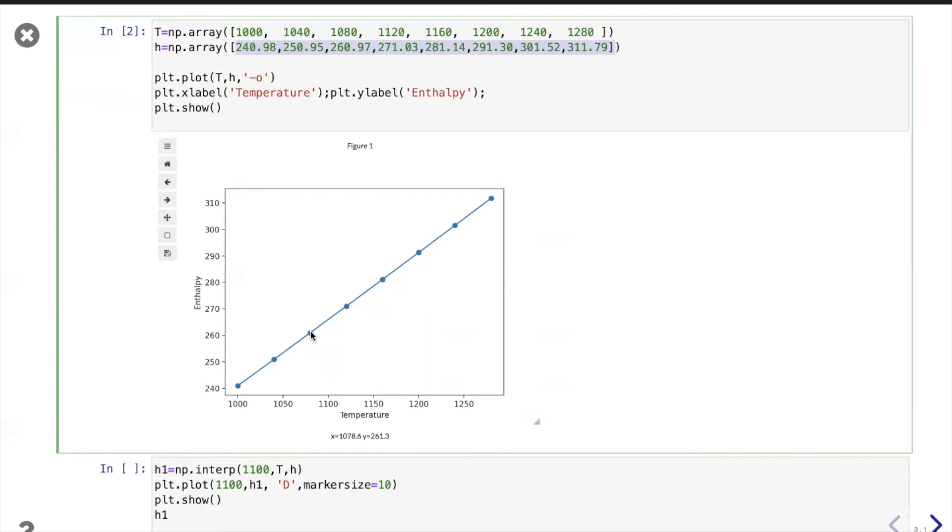The only thing is that the points on the table are actually the dots that are in the plot and the lines in between is the approximation, it's a linear approximation of the function.